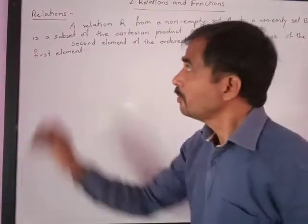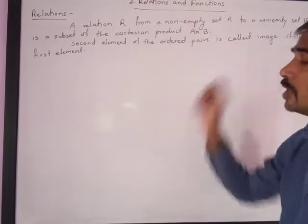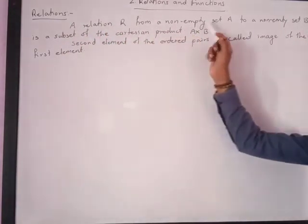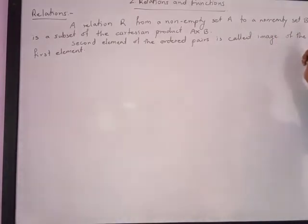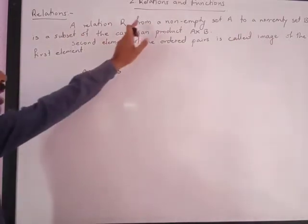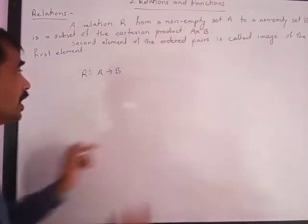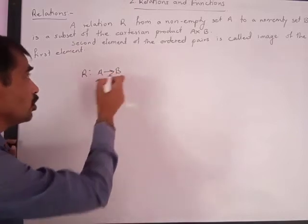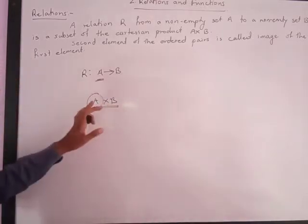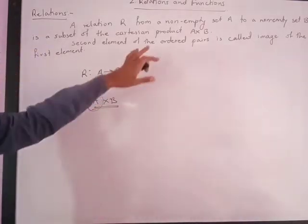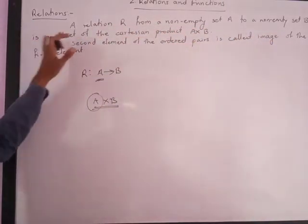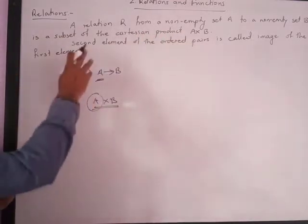Dear friends, let us understand the next topic, that is the chapter Relations and Functions. Earlier we have studied the Cartesian product. Now let us understand the relation. A relation R from a non-empty set A to a non-empty set B is a subset of the Cartesian product A cross B. Both A and B must be non-empty sets, because if one of the sets is a null set, the Cartesian product will also be null.